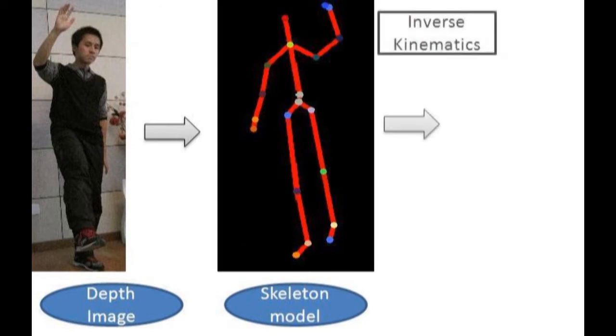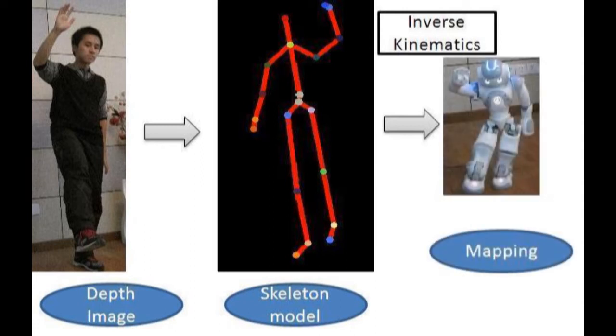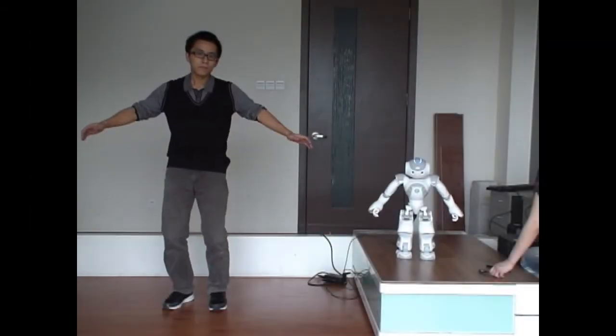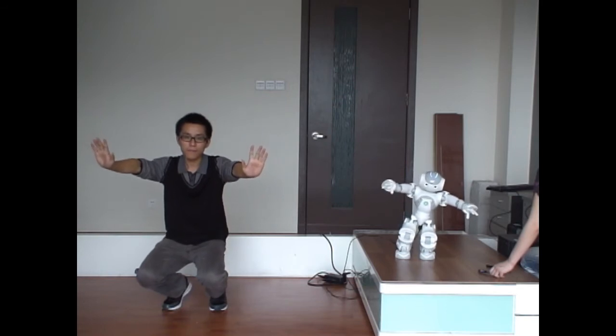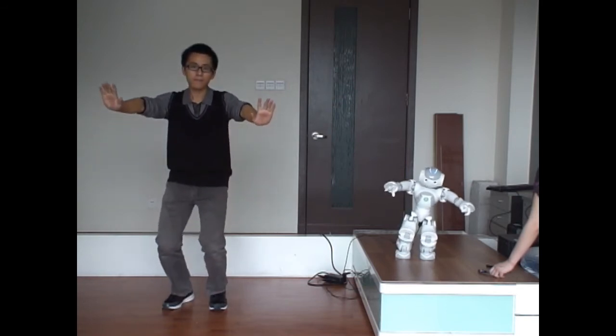Then inverse kinematics is applied to map the posture to each joint angle on the robot. A virtual spring damper system is attached to each degree of freedom to drive the robot to the target posture.